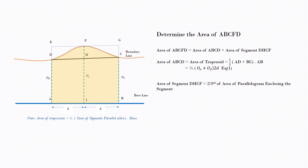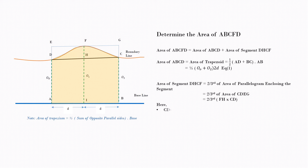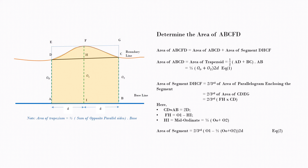The area of the segment DHCF can be given as two-thirds of the area of the parallelogram enclosing the segment. So the area of segment DHCF = (2/3) × FH × CD, where CD can be approximately taken equal to the baseline AB, which is 2D. FH can be given as O1 minus HI, where HI is the mid-ordinate equal to (O0 + O2) / 2. Hence, the area of the segment = (2/3) × (O1 − (O0 + O2)/2) × 2D.